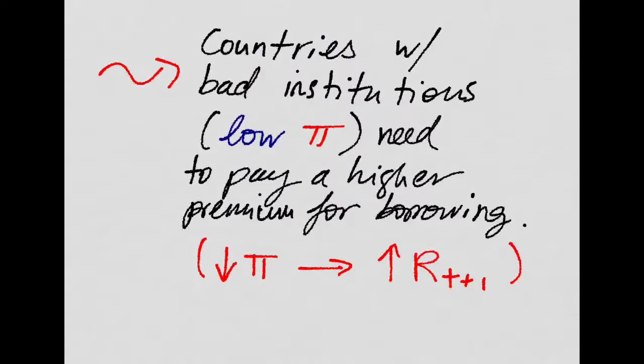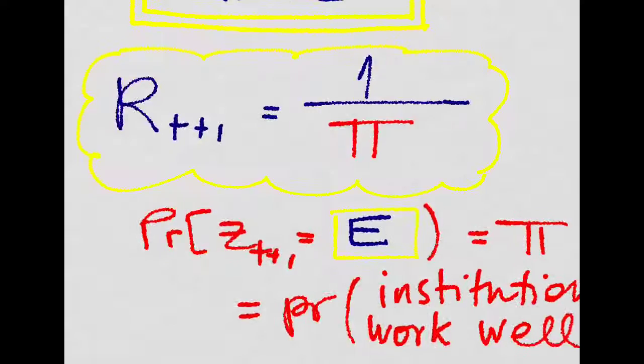Now, countries with bad institutions, with low pi's, will need to pay a higher premium for borrowing. And this is why the higher the pi, the lower the borrowing rate.